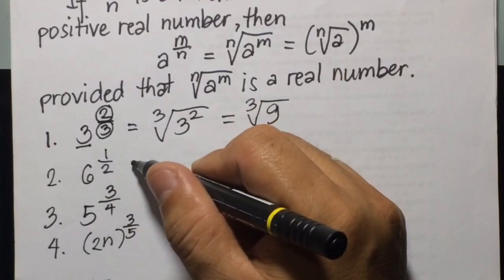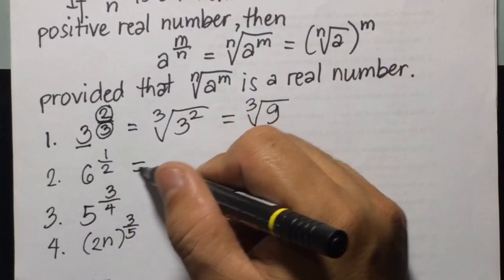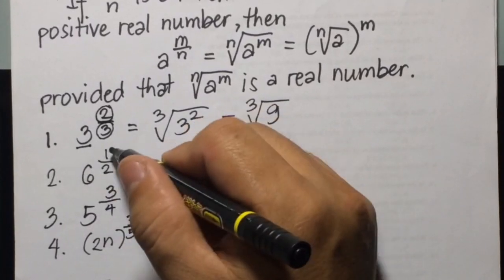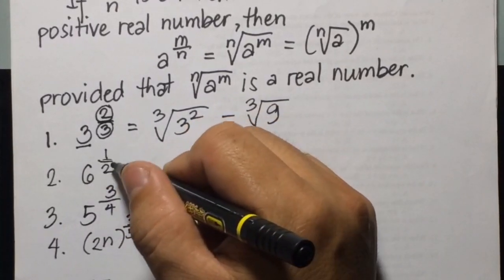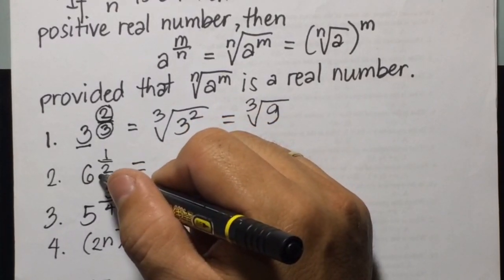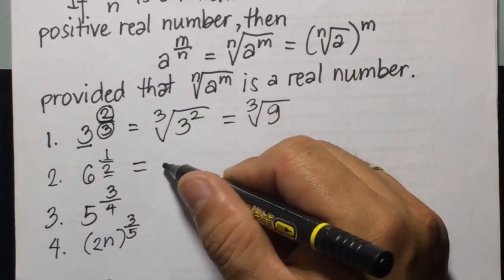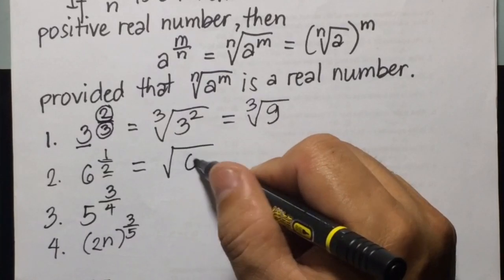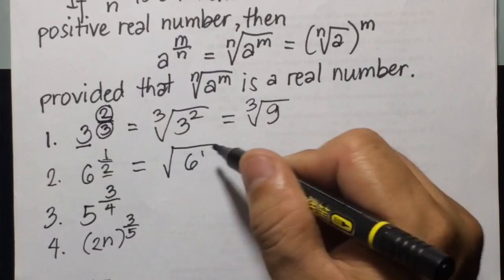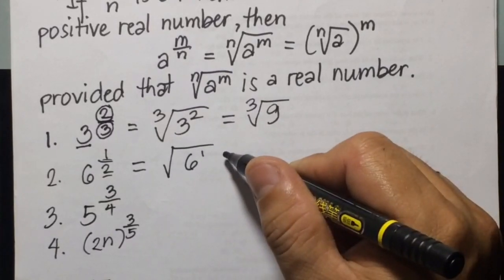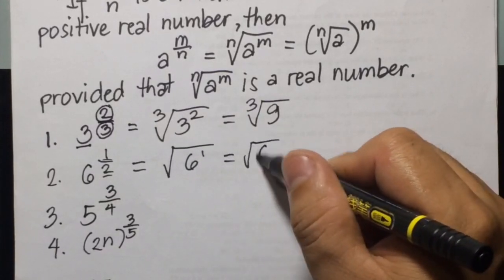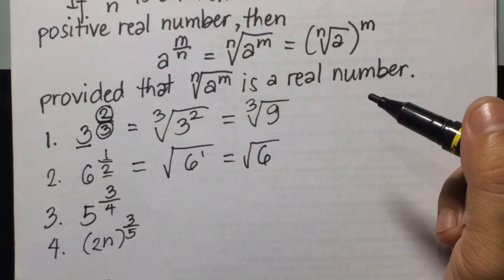Number 2: 6 to the power of 1 half. So 1 is the exponent and 2 is the index, so we're going to have that as the square root of 6 to the power of 1, or simply the square root of 6.